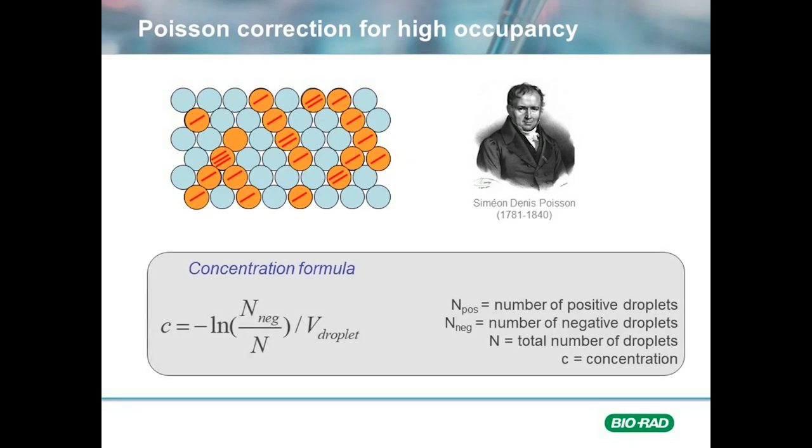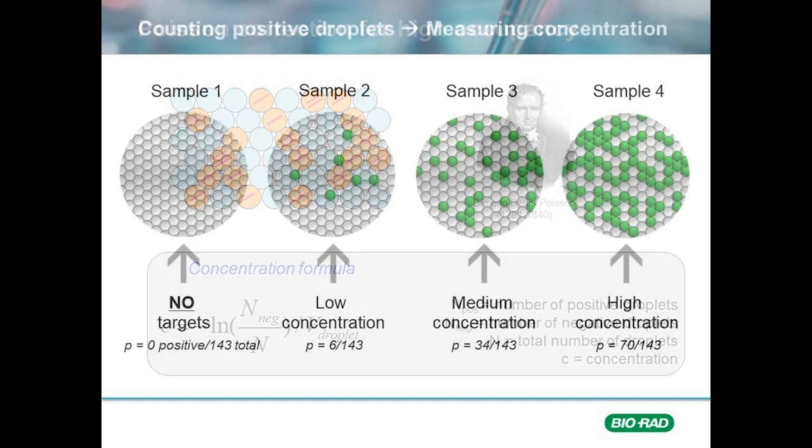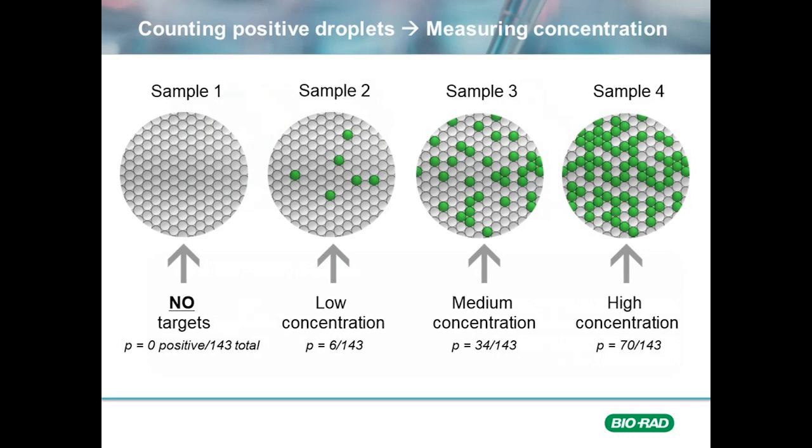This is the formula we use to calculate concentration. Copies per microliter of reaction equals the negative ln of the number of negative droplets divided by the number of total droplets. This value is then divided by the volume of our droplets. With this in mind, if we go back to our examples from a few slides ago and look at sample 1, it would be safe to say that that sample is negative for our target of interest.